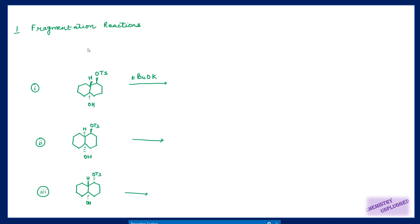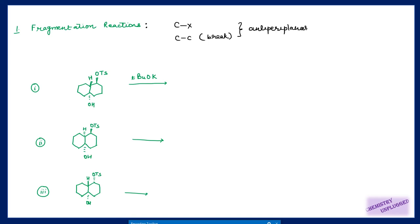Welcome back to my channel. In today's video we will see how we can generate carbon-carbon double bonds using fragmentation reactions. Fragmentation reactions are reactions in which a carbon-carbon bond will break and we will generate a new carbon-carbon double bond. The important point about fragmentation reactions is that the carbon-leaving group bond and the carbon-carbon bond which is going to break should be anti-periplanar to each other.